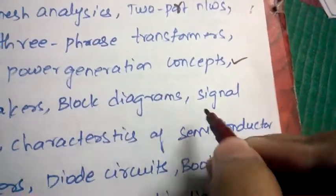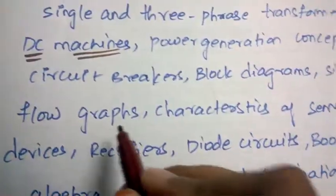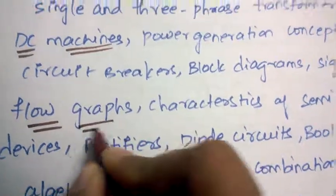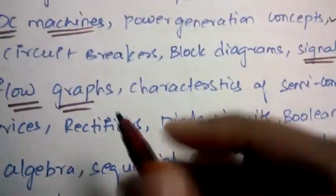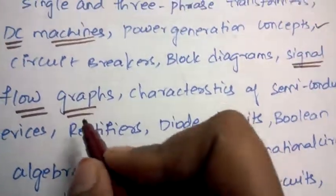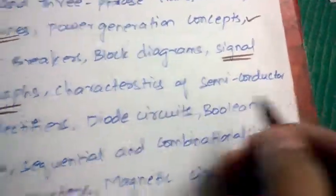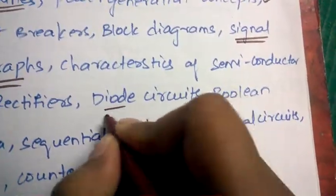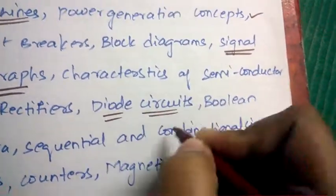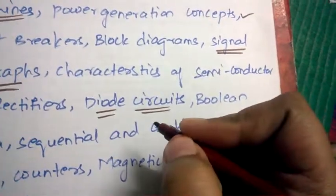Circuit breakers, block diagrams, signal flow graphs - signal flow graphs also has high weightage for GATE and it is one of the most important topics. Characteristics of semiconductor devices, rectifiers, diode circuits - from this also they may be asking indirect questions or any basic question.